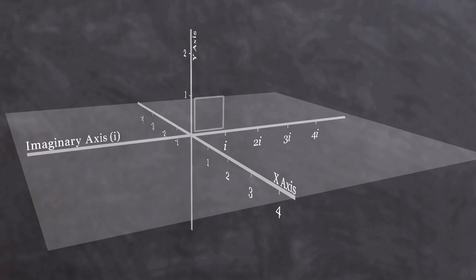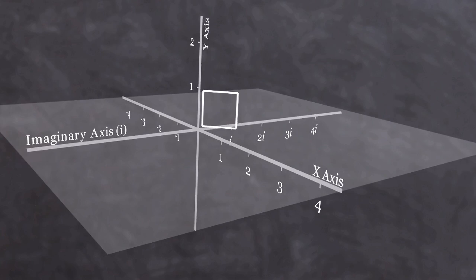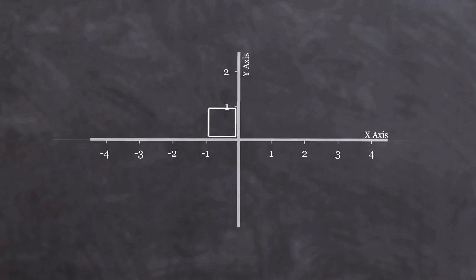So if I want to use a squaring operation to transform my unit square so that its length ends up as minus 1, I have to multiply it by i to rotate it by 90 degrees, and then by i again to rotate it by another 90 degrees. Therefore, i squared is a rotation of 180 degrees via the imaginary axis, which equals minus 1. And that is why i is the square root of minus 1.